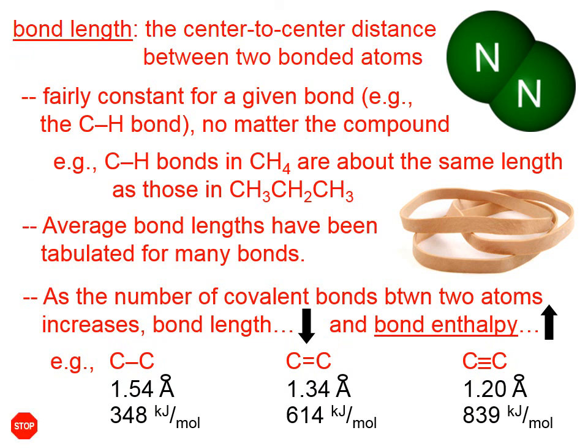To illustrate this, I've put the bond length between a carbon-carbon single bond and its bond enthalpy, that is the energy required to break it, and then I've done that for a carbon-carbon double bond and a carbon-carbon triple bond. And you can see that as the number of covalent bonds between atoms increases, the bond length goes down and the bond enthalpy goes up.